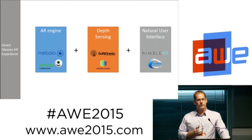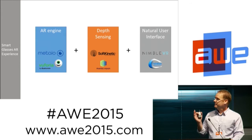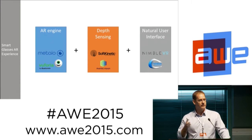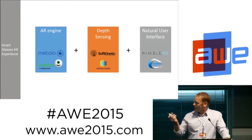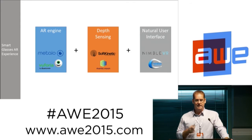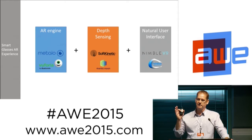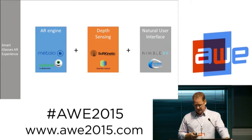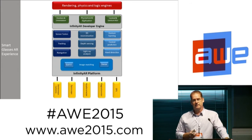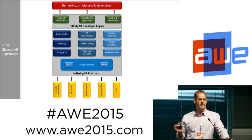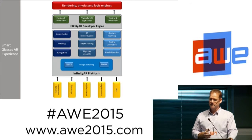What you need today to allow smart glasses to work are three ingredients: an augmented reality engine — whether it was Metaio before they were bought by Apple, or Vuforia — a depth sensor like Mantis Vision or SoftKinetic, and someone handling the control. What Infinity has done is create one single engine based on IMU plus stereo vision that allows you to do all of that.